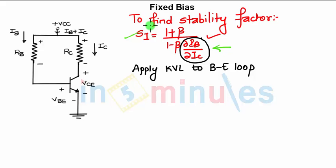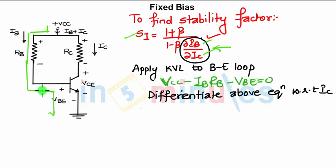Now for that we need to apply KVL to the base emitter loop. From where to where you have the base emitter loop, you know this is the entire base emitter loop. When you apply KVL to base emitter loop, you will have Vcc minus IbRb minus Vbe equals 0.